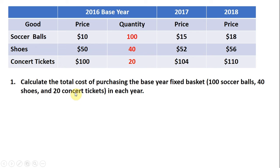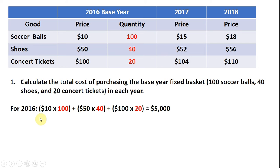The first step in calculating the consumer price index is to calculate the total cost of purchasing the base year fixed basket, highlighted in red. We assume that consumers keep buying that same quantity year in and year out. For 2016, the cost of that fixed basket is just price times quantity for each item summed up: 10 times 100, 50 times 40, and 100 times 20, giving us $5,000.